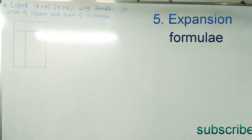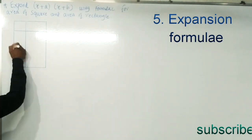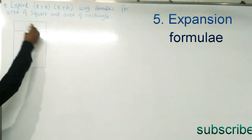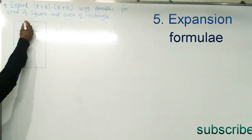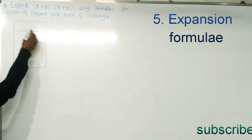Today we will study the expansion of the formula (x + a)(x + b). We will expand this binomial using the formula for area of a square and area of a rectangle. Let us consider a big rectangle which we will divide into 4 parts.